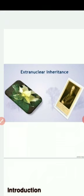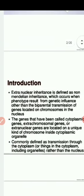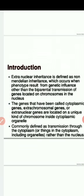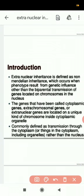Welcome dear students. Today we will study extra nuclear inheritance. Extra nuclear inheritance, cytoplasmic inheritance, and maternal inheritance are all one and the same — don't get confused. Extra nuclear inheritance is defined as non-Mendelian inheritance, meaning Mendel's laws do not apply and transmission does not depend upon the nucleus. The genes are present in the cytoplasm, and this inheritance is called cytoplasmic genes, extra chromosomal genes, or extra nuclear genes.